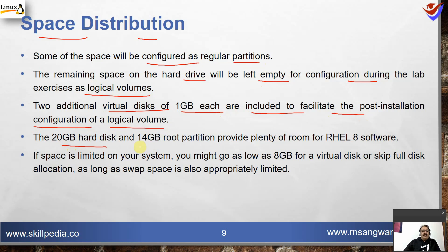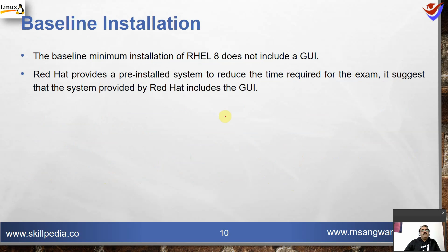The 20 GB hard disk with a 14 GB boot partition provides plenty of room for RHEL 8 software. If space is limited on your computer, you might go as low as 8 GB of virtual disk or skip the full disk allocation, as long as the swap space is also appropriately limited and configured.